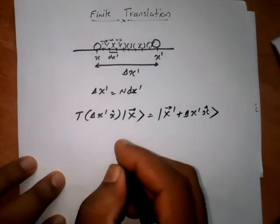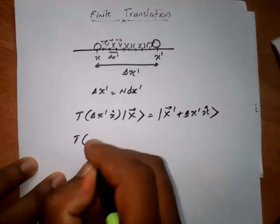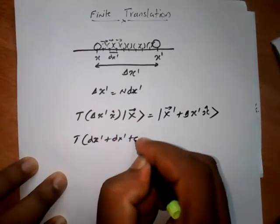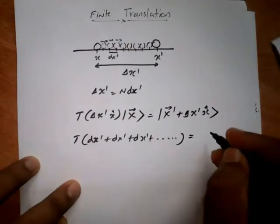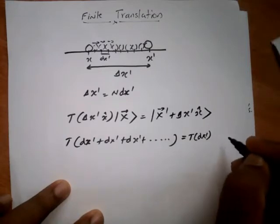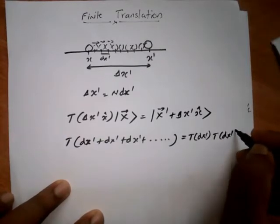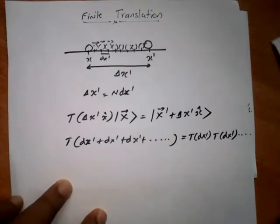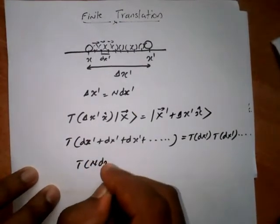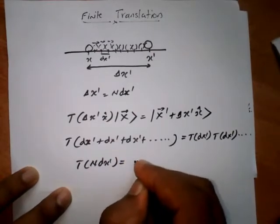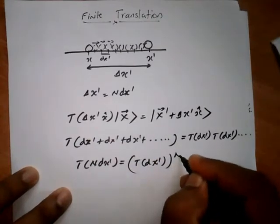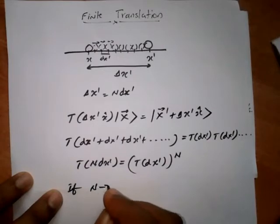By using the property of the infinitesimal translation operator, we can write T(dx' + dx' + dx' + ...) equal to T(dx') · T(dx') · etc. This can be written as T(n·dx') equal to T(dx') whole raised to n. If n tends to infinity, then the divisions dx' become so small.